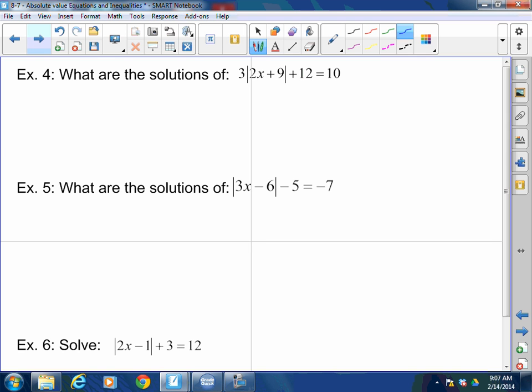Remember, get the absolute value alone, right? Well check out what happens in this particular case. Remember that I started out this lesson, I'm going to tell you the absolute value is always positive, correct? So look what happens here. I'm going to subtract 12 to both sides. So I got 3|2x + 9| = -2. Divide by 3.